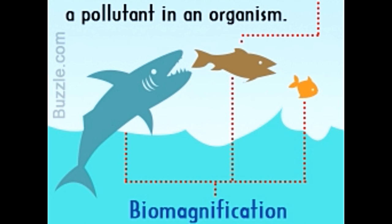In summary, both bioaccumulation and biomagnification are related to the transfer of pollutants from one level of the food chain to the other, but bioaccumulation is restricted to an organism, whereas biomagnification occurs across the food chain.